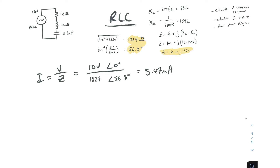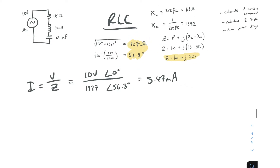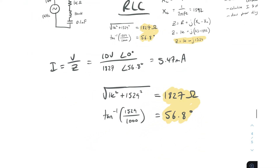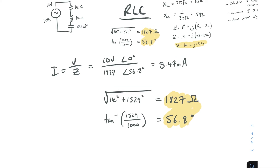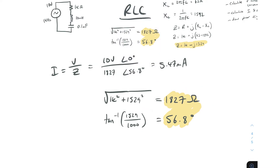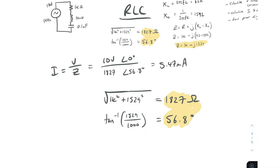I've noticed a mistake. When finding the polar form of the impedance, we have minus J1529. When finding the magnitude, the minus sign is irrelevant because you're squaring it — squaring a minus gives a positive. So you can ignore the minus for the magnitude. But you can't ignore it for the angle.